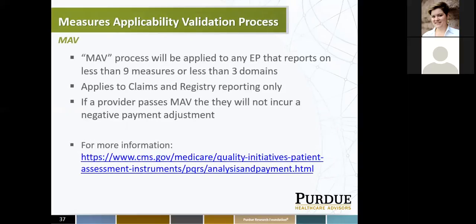The MAV — measure applicability validation process — is a process CMS applies to any provider that reports on less than nine measures or less than three domains. It applies to claims and registry reporting only. If the provider passes the MAV process, they will not incur a negative payment adjustment. Basically, out of all the measures you can report on, if you can only find eight or seven measures, report on as many as you can and submit to CMS. If they find you only have eight measures, they'll look at your claims data and the measures submitted. If you pass the MAV process — think of it as a scrubber — then you would avoid the negative payment adjustment.